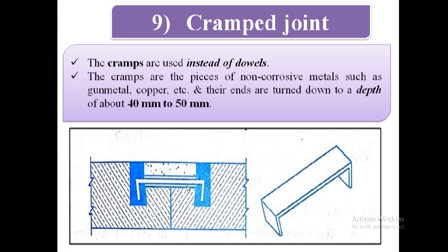The cramps are the pieces of non-corrosive metals such as gunmetal, copper, etc., and their ends are turned down to a depth of about 40 mm to 50 mm.